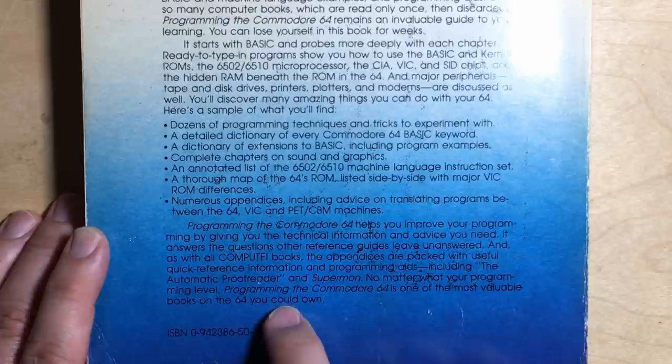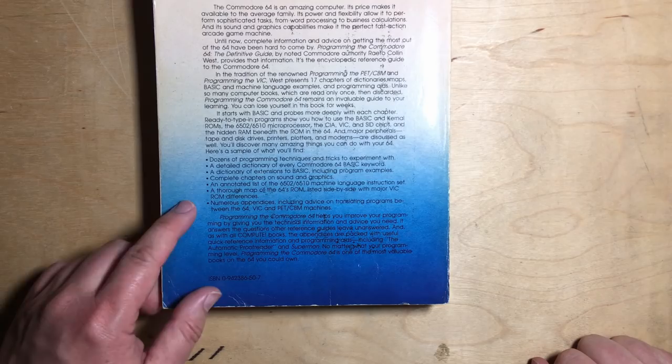Programming the Commodore 64 helps you improve your programming by giving you the technical information and advice you need. It answers the questions other reference guides leave unanswered, and as with all Compute books, the appendices are packed with useful quick reference information and programming aids, including the automatic proofreader and Supermon. No matter what your programming level, Programming the Commodore 64 is one of the most valuable books on the 64 you could own. And I agree with almost all that. A little bit of it is hyperbole, but it's marketing, right?